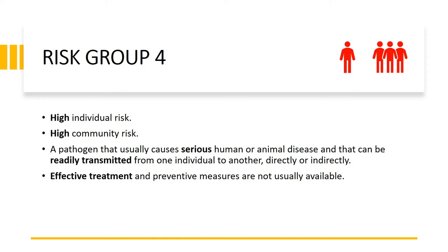Finally, we have the most dangerous risk group, which is risk group four. This risk group poses a high individual risk and a high community risk. It causes serious harm in both individuals and communities, there is no effective treatment, there is no vaccine available, and there is a very high rate of morbidity and mortality. This is especially true in the case of respiratory viruses or viruses transmitted via aerosols.